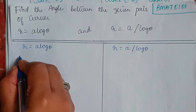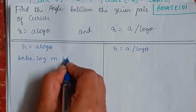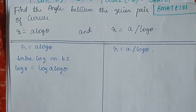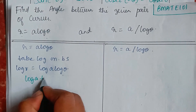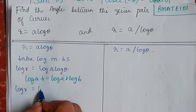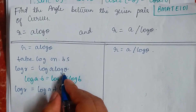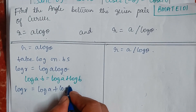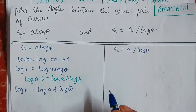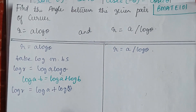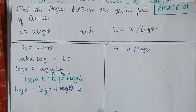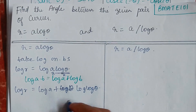For the first curve r = a log θ, we take log on both sides. So log r equals log of (a log θ). Using log(ab) = log a + log b, after expanding this we get log r equals log a plus log(log θ). Since the original term is log θ, we apply the identity making it log of log θ. This is the expansion for the first curve.